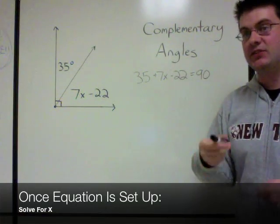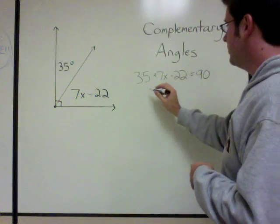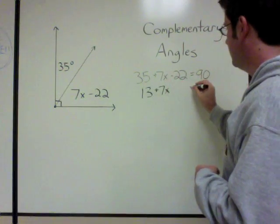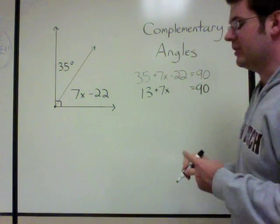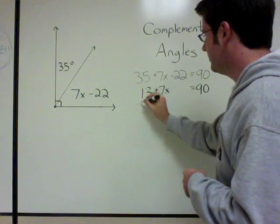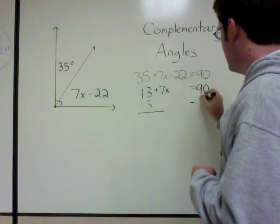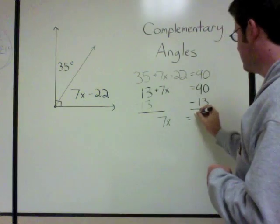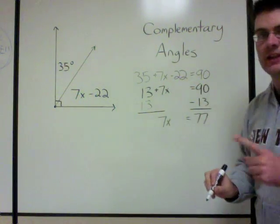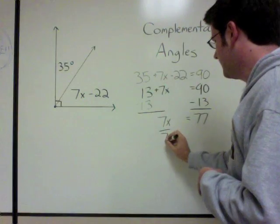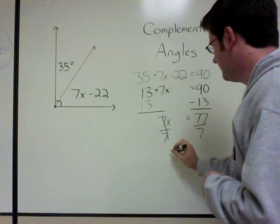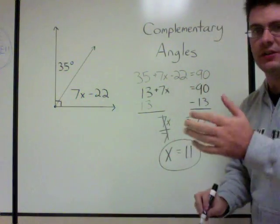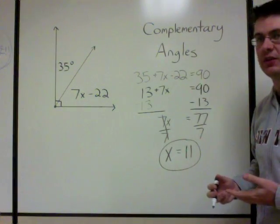Now we use some algebra to solve. Combine like terms: 13 plus 7x equals 90. Subtract 13 from both sides: 7x equals 77. Divide both sides by 7, and x equals 11. That's how you use complementary angles in an algebra problem.